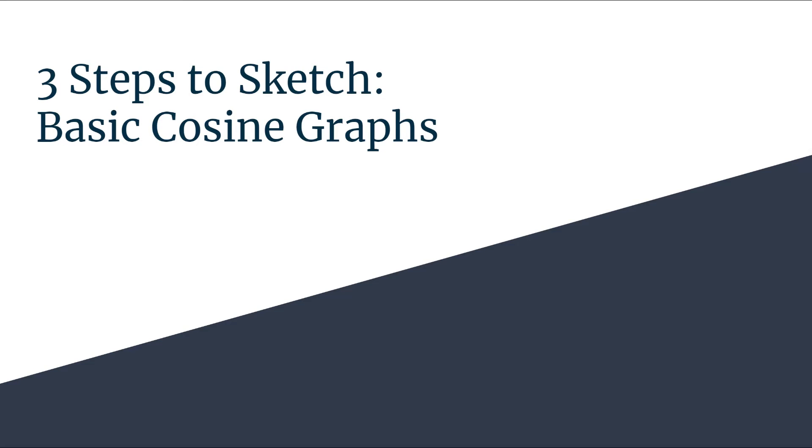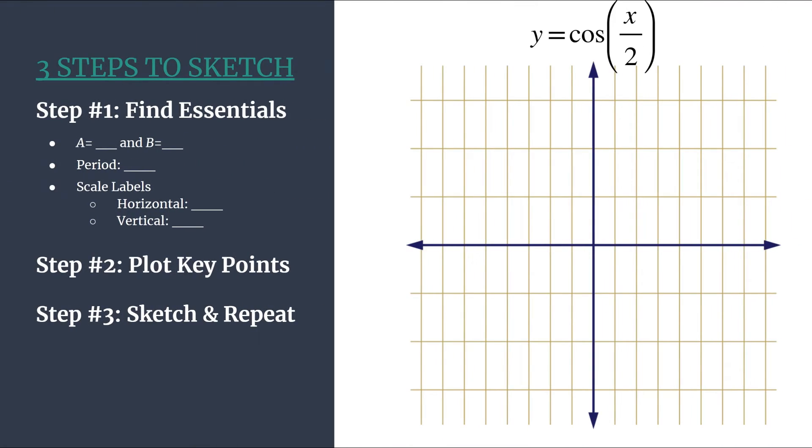In this video we'll use three steps to sketch the graph of a pretty basic cosine graph. We're looking at the equation y equals cosine of x over 2. So here's our method outline and we've got our grid set up.